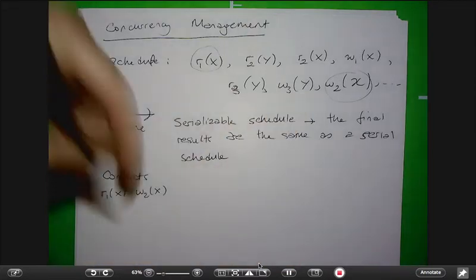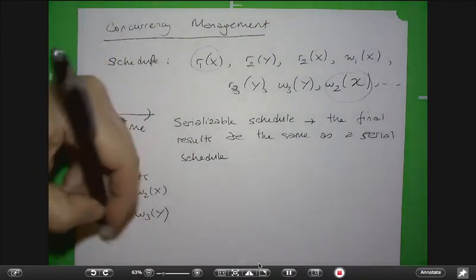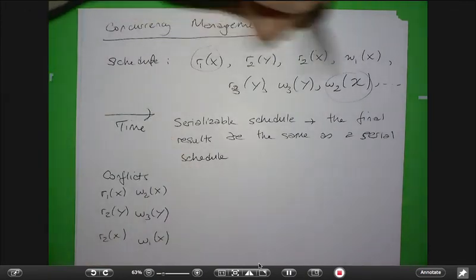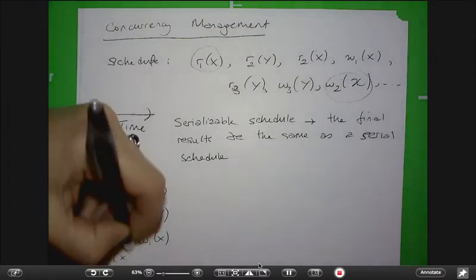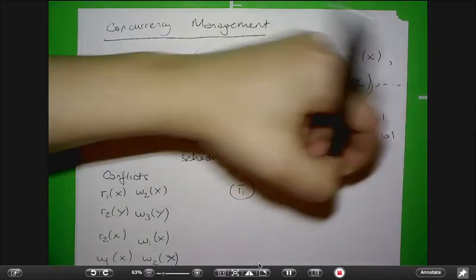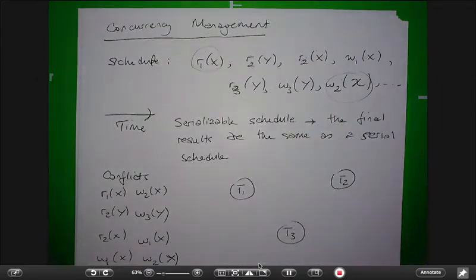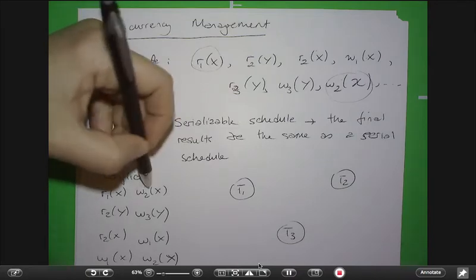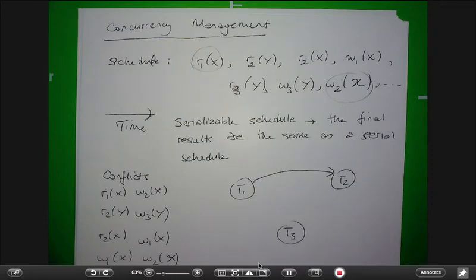Read-2 of Y conflicts with write-3 of Y. Read-2 of X conflicts with write-1 of X. And write-1 of X conflicts with write-2 of X. If you get all the conflicts, you can draw what is called a conflict graph. A conflict graph has a vertex for every transaction, and a directed edge from one to another if transaction 1 does something that conflicts with transaction 2 before transaction 2 does it.